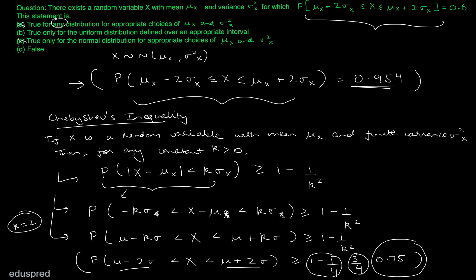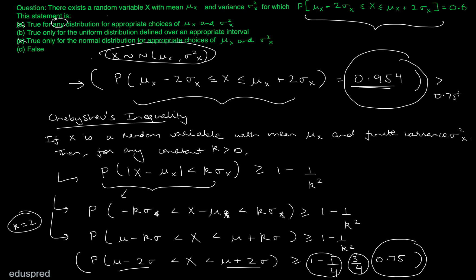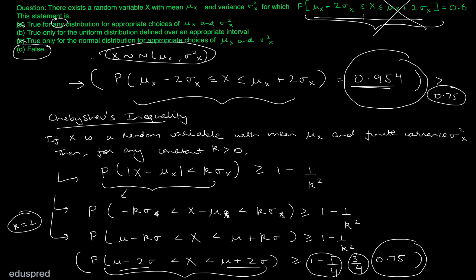Chebyshev's inequality provides a lower bound — for specific distributions the probability can equal or exceed 0.75, but never fall below it. For example, if X follows a normal distribution, this probability is 0.954, which satisfies the inequality. However, the given statement says this probability is 0.6, which violates Chebyshev's inequality. Therefore, the statement is false, and the correct answer is option D.